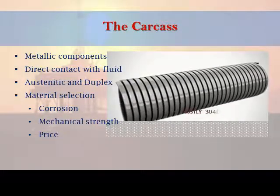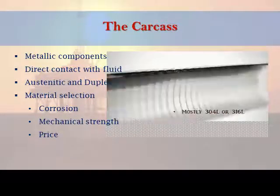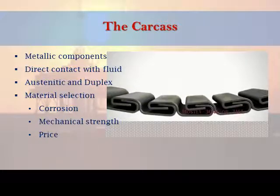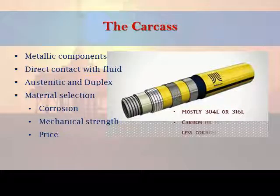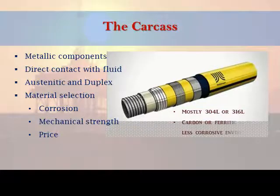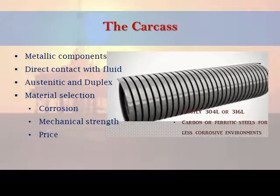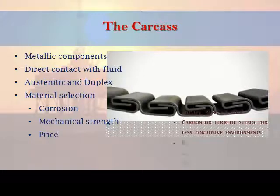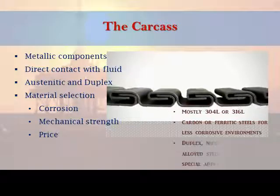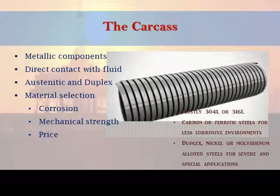For most applications, austenitic stainless steel, typically AISI 304L, 316L or similar, is used. For less corrosive bore fluids, carbon steel or ferritic stainless steel may be selected. More demanding applications may require high alloy stainless steel, duplex, nickel alloyed, or molybdenum alloyed steel.